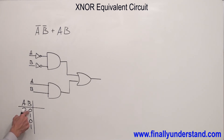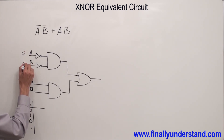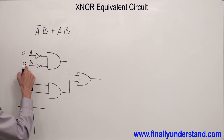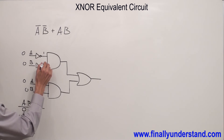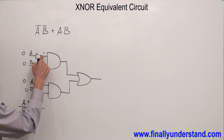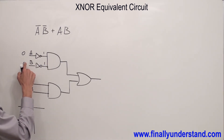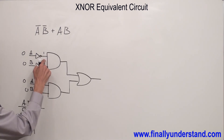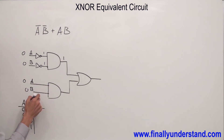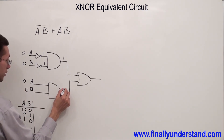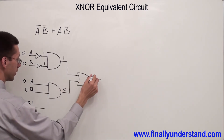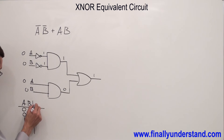I'm going to apply 00 to my inputs. 00 is going to produce 11 here. Because 0 goes to the inverter, and on the output I'm going to have 1. The same story happens here — 0 is inverted to 1. So 1 AND 1 gives me 1, and 0 AND 0 gives me 0. Then 1 OR 0 gives me 1.